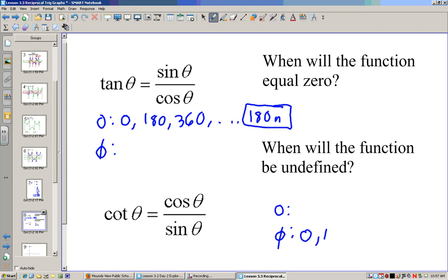Now that would be the same for when cotangent is undefined because when sine is zero this function is undefined. So we could do zero, 180, and so on and so on. Really just 180 n is an equation that covers all of it.